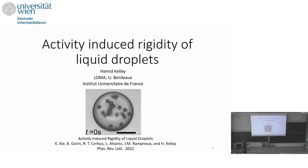The question we ask is: what will activity do to the properties of the droplet? The experiment we thought of was — let's deform this droplet. The resistance to deformation comes mostly from the surface tension. But suppose we turn on the activity of the particles — will that resistance increase, decrease, or will it be anisotropic? That's the question we ask.